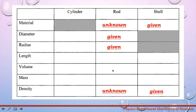Now you have both the volume and mass for the material the rod is made from, so you can calculate the density of that material and identify it using the information sheet at your station. Finally, calculate the density of the composite cylinder by dividing the total mass by the total volume. It is important to show all your calculations in the space provided in your laboratory manual and to include units for every measurement and calculation.